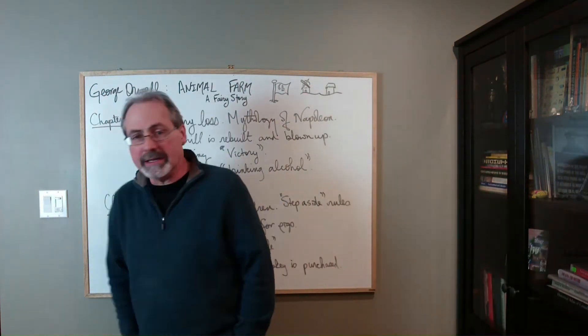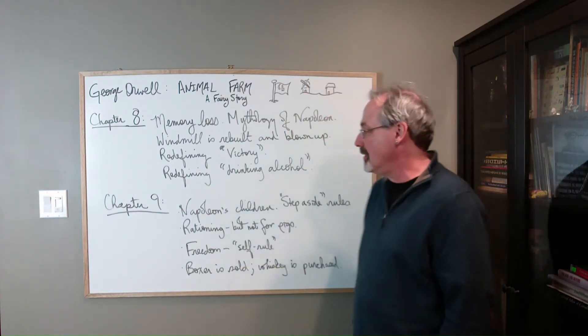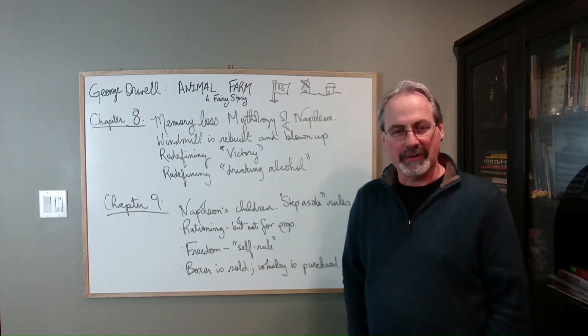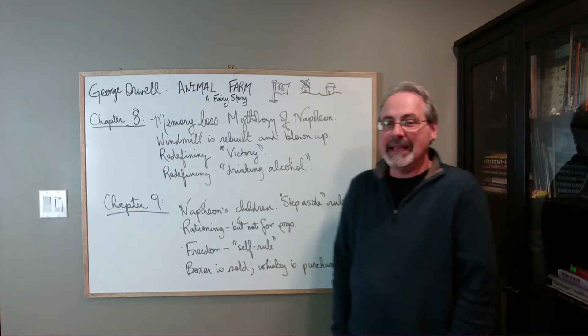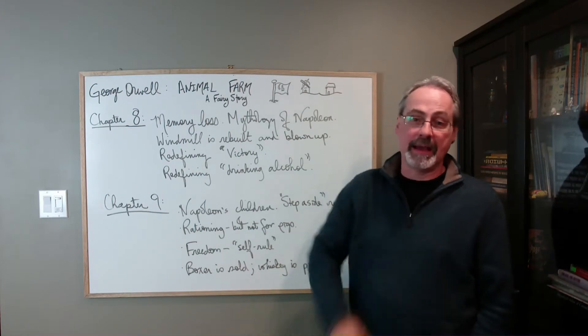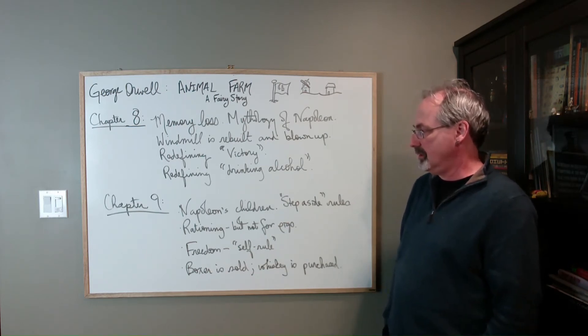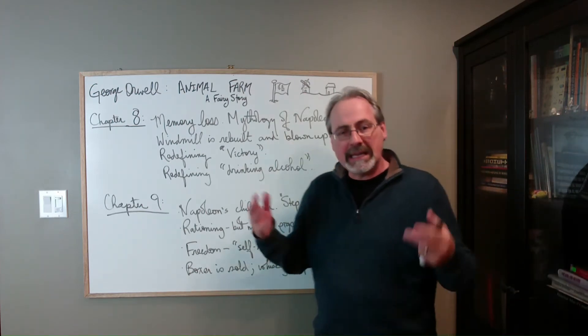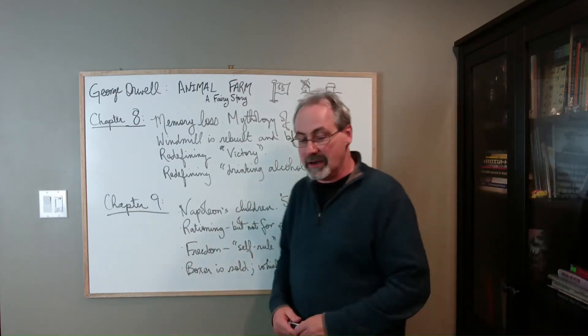And as Napoleon and the pigs discover more human vices and start to take them on, starting to drink alcohol, which again, like sleeping in a bed, that was forbidden. But what does it mean to consume alcohol now? What exactly are we talking about? Well, it's not alcohol per se. Drinking alcohol per se isn't bad. It's drinking alcohol to excess. That's bad. So now we have a redefining of the notion of what it means to drink alcohol and why it was and what did we really mean at the time. So again, this continual appropriation of everything by the governing structure.